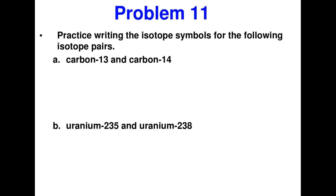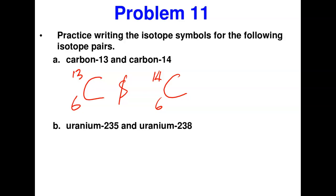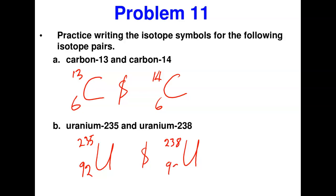Practicing how to write isotopic symbols: Carbon is number 6 in the periodic table. Carbon-13 is written with superscript 13 and subscript 6 to the left of C. Carbon-14 is written with superscript 14 and subscript 6 — the atomic number doesn't change, only the mass. These are two isotopes of carbon. For uranium (atomic number 92, symbol U): uranium-235 has superscript 235 and subscript 92; uranium-238 has superscript 238 and subscript 92.